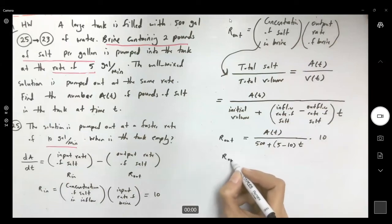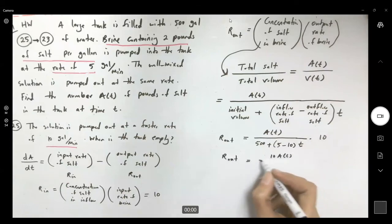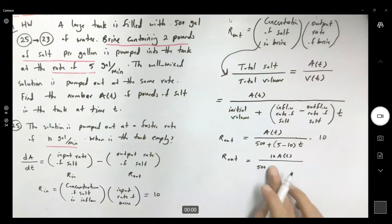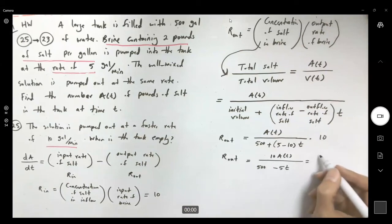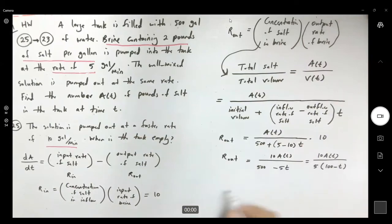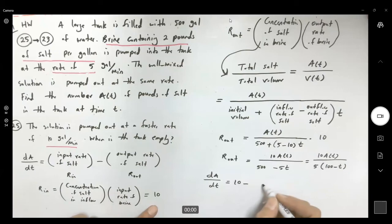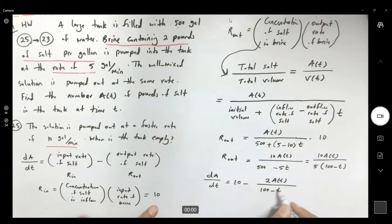So R_out becomes 10·A(T) divided by (500 minus 5T), which factors to 10·A(T) divided by 5(100 minus T), or 2·A(T)/(100 minus T). Therefore, dA/dT equals 10 minus 2·A(T)/(100 minus T). We have now built our differential equation.